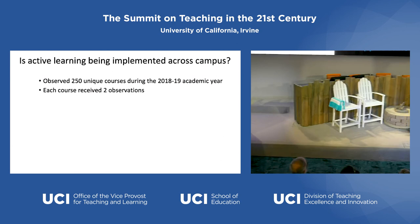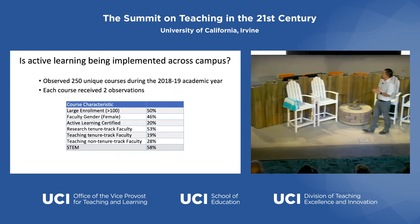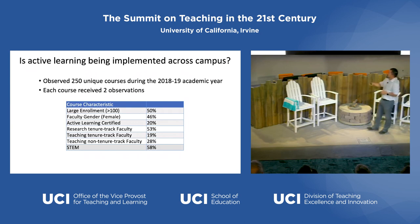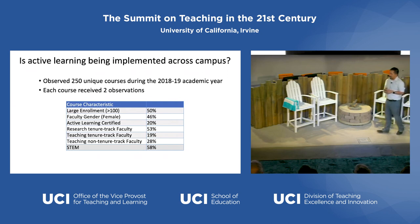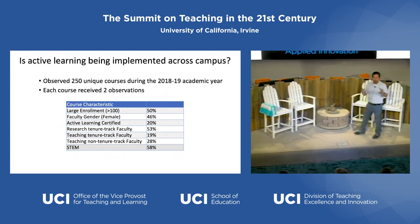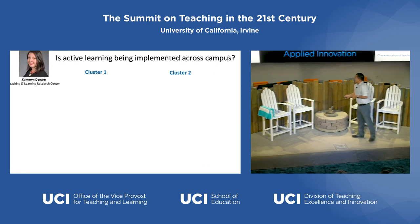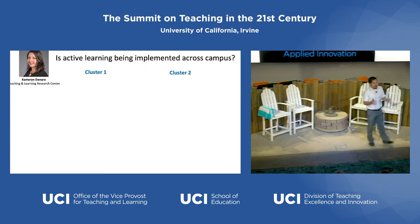In 2018-19, they observed over 250 classes, each getting two different observations. About 50% were large enrollment — more than 100 students — about 50% taught by female faculty, about 20% were certified through the active learning program, a wide range of faculty types, and about 50% were STEM courses. With this data, they wanted to characterize these classes. Using cluster analysis conducted by Cameron DeNaro from the Teaching and Learning Research Center, the 250 classes fell into two separate bins.